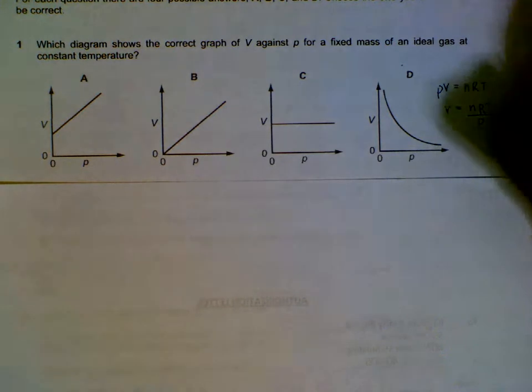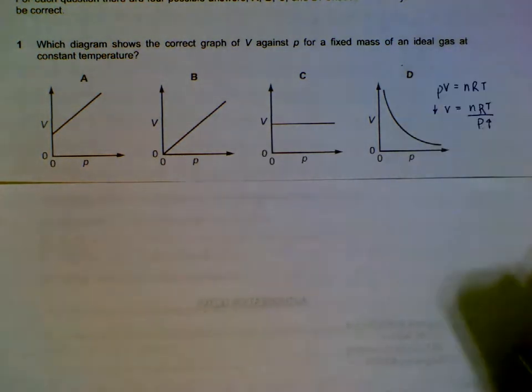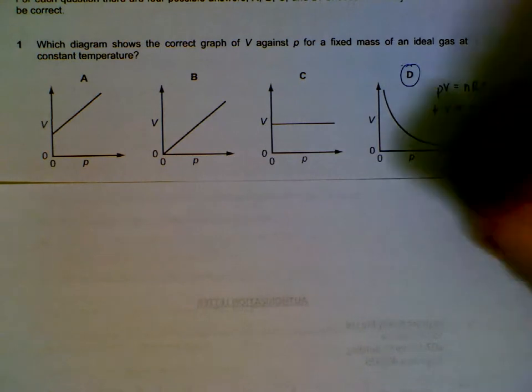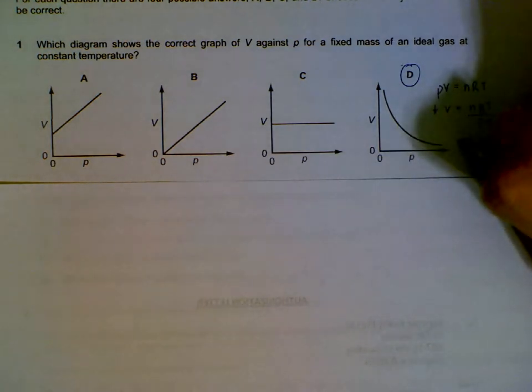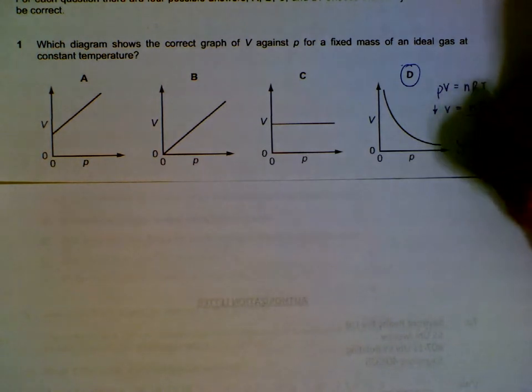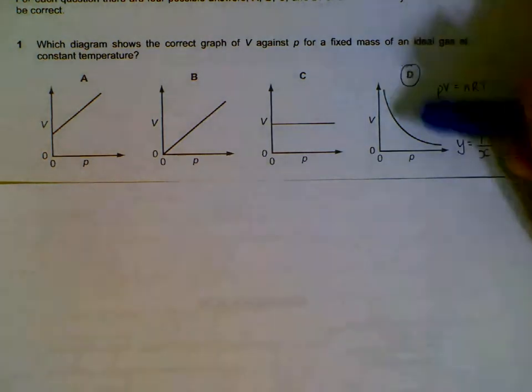We can see that if p increases, your v will be decreasing, which is what is given as option D. Another way you can view it is something like your vertical axis is y and your horizontal axis is x, so we have something like y equals 1 over x graph, which is this curve.